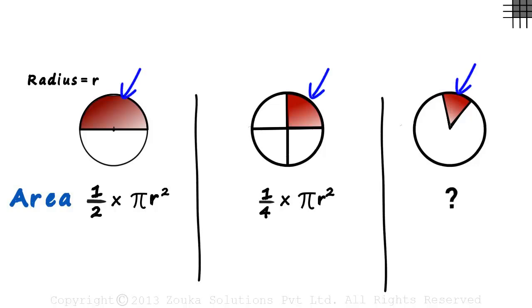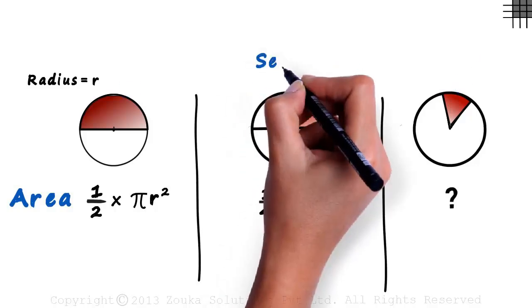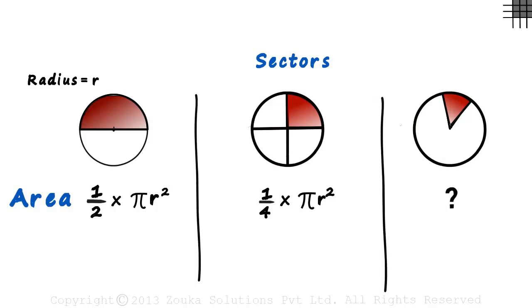These colored regions are called sectors. You may think of a sector as a pizza slice. A sector is covered by two radii and an arc.